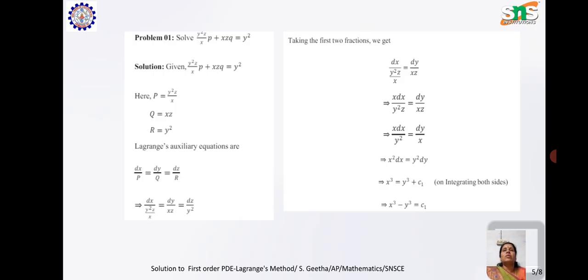Consider the following problem. We are going to solve y²(z/x)p + xz·q = y². This is of the form Pp + Qq = R.